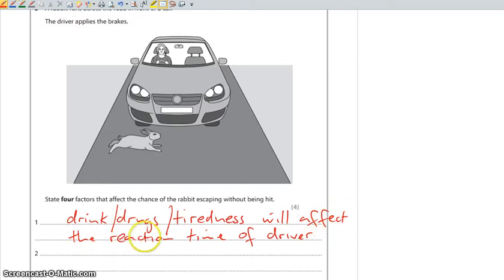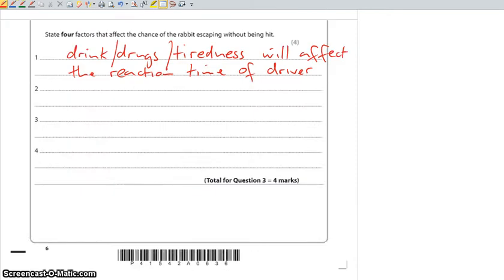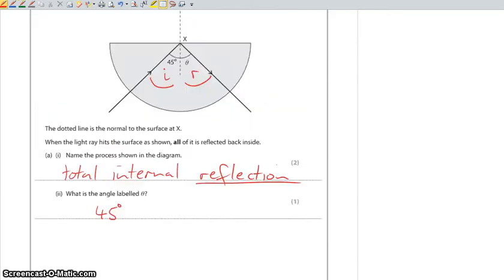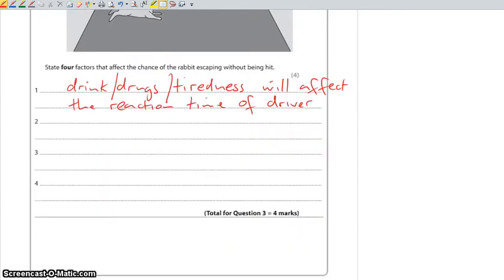Now the other factor that affects stopping distance is anything that affects the braking distance of the vehicle. So things like condition of tyres, brakes, the road surface.